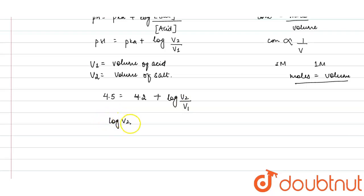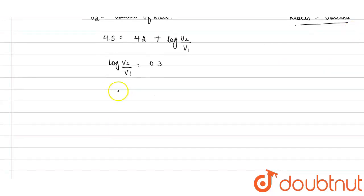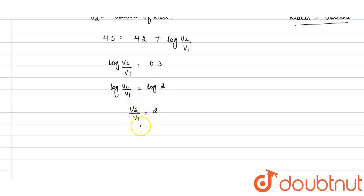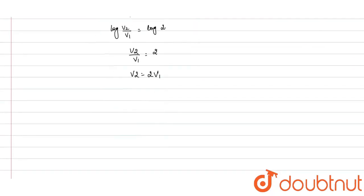log(V₂/V₁) = 0.3, and 0.3 can be written as log 2 (since log 2 ≈ 0.3). The logs cancel, giving V₂/V₁ = 2, so V₂ = 2V₁ — volume of salt equals twice the volume of acid.